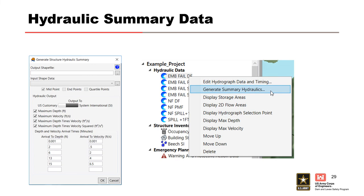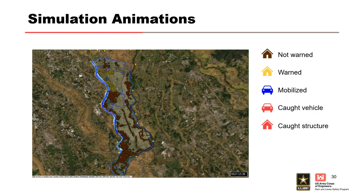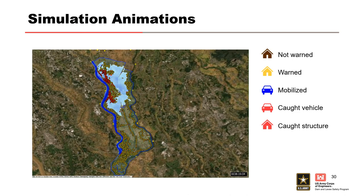There's also a LifeSim animation visualization. In this example from the Joseph Levy study, yellow dots show people getting warned, blue represents vehicles evacuating, and you can see warnings moving throughout the study area. As the water comes in, red indicates people caught within their structure or vehicle. This is a really helpful tool for visualizing problematic areas — making sure you find where people are concentrated in your study area, zooming in on those areas, and making the model as accurate as possible to get a full understanding of your sensitivities.